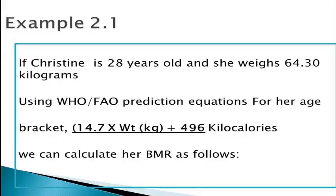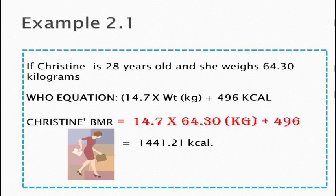On the other hand, if Christine is aged 28 years and weighs 64.30 kilograms, her basal metabolic rate using the WHO prediction equation is calculated as 14.7 × 64.30 kg + 496 kilocalories, which gives us 1,441.21 kilocalories.